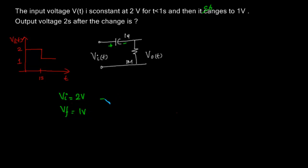The time constant of the circuit is RC, which will be 1 microfarad into 1 mega ohm, that will be 1 second.